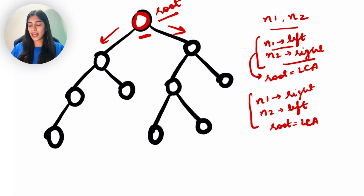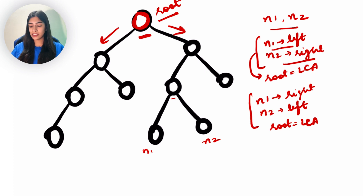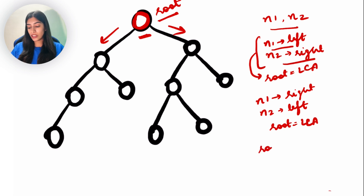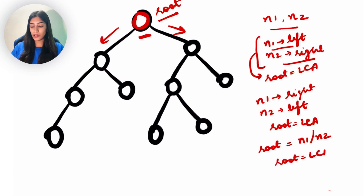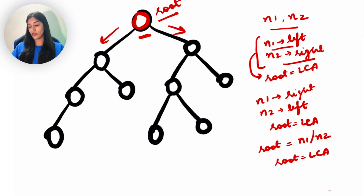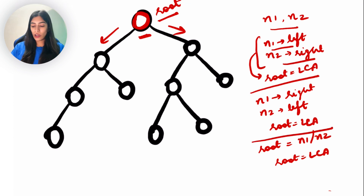Another case: if root's value equals N1 or N2, then the root itself is the LCA, because that node will be the lowest common ancestor. So we have now discussed three cases where root itself is the LCA: N1 left/N2 right, N1 right/N2 left, and root equals one of the nodes.